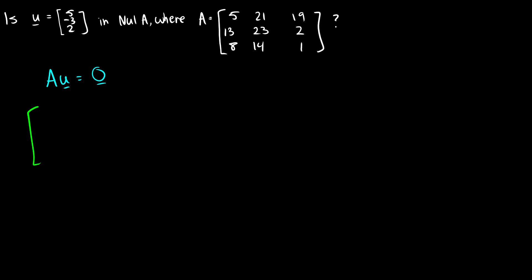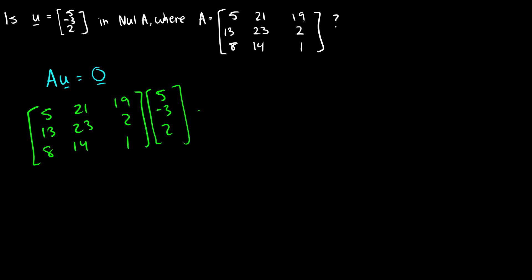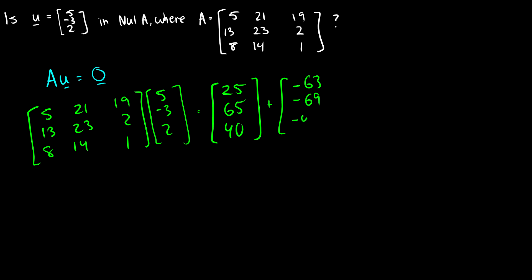Let's take our matrix A — which is [5, 21, 19; 13, 23, 2; 8, 14, 1] — and multiply it by (5, -3, 2). Using Ax = b column multiplication: 5 times the first column gives (25, 65, 40). Adding -3 times the second column gives (-63, -69, -42). And adding 2 times the third column gives (38, 4, 2).